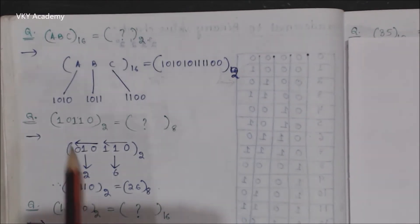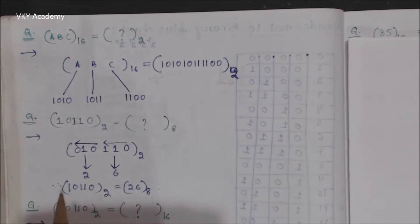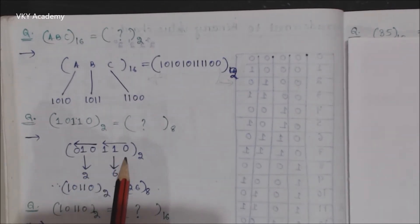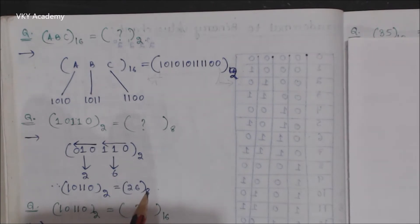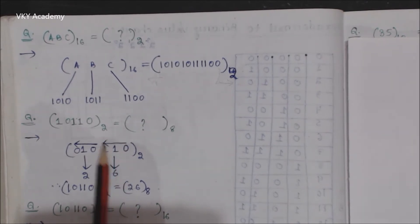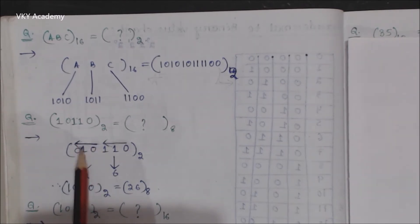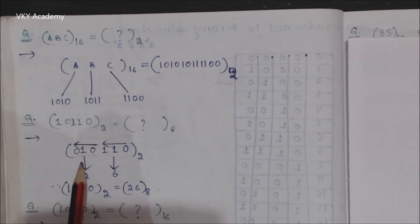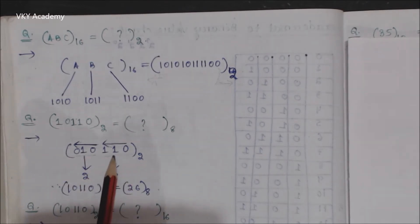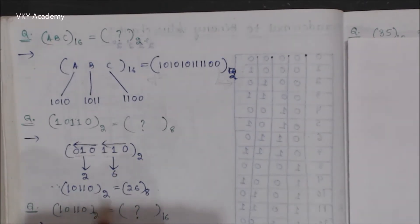Now let us convert a binary number into octal. The binary number is 10110. From the LSB I will make groups of 3 bits. The first group is 011 and the next group is 10 — since there is a deficiency of 1 bit I pad a 0, giving 010. This second set has octal value 2 and the first set has octal value 3... sorry, octal value 6. So the equivalent octal for this binary is 26.